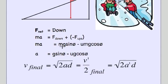So again, the moneymaker mg sine theta is down, minus the friction force, mu mg cosine theta.